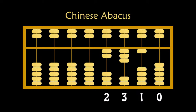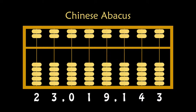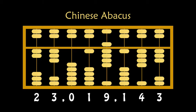The upper beads are worth 5, and the lower beads are worth 1. You can count all of the beads touching the central bar. This is roughly the population of Shanghai: 23,019,143. Notice that the same 3-bead pattern means 3 or 3 million depending on where it is. Notice the 0 — number systems which rely on place value really need this 0. The abacus represents 0 by having no beads touching the central bar.